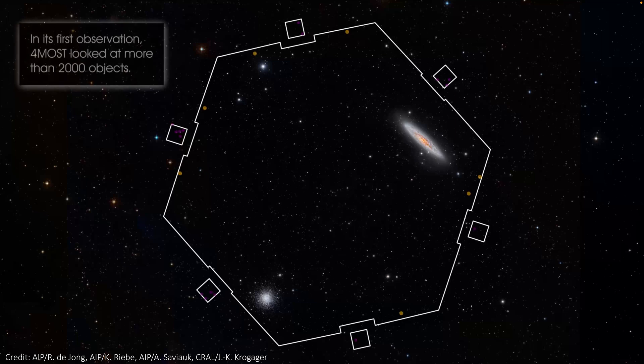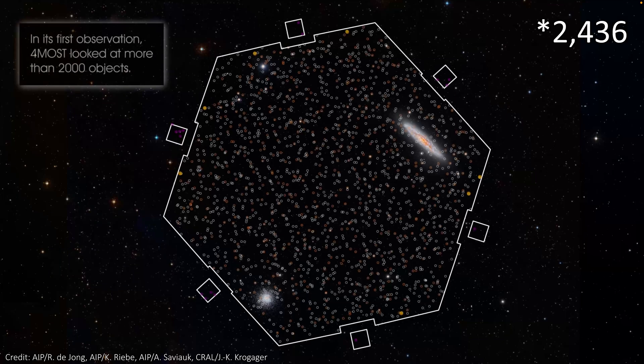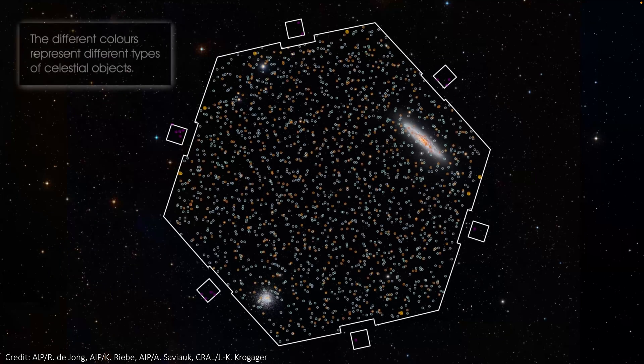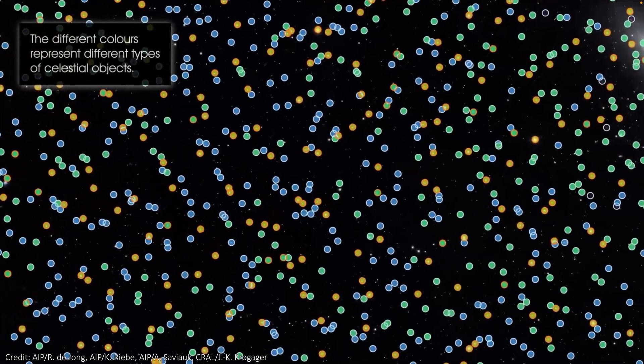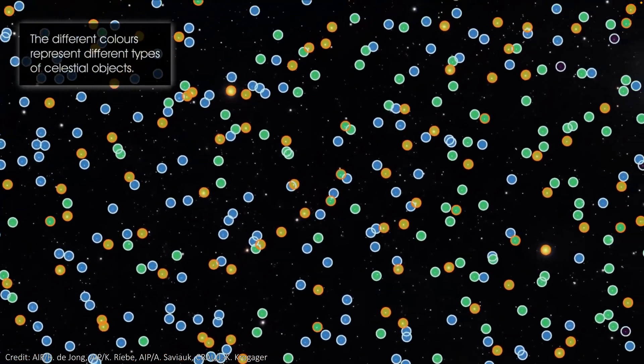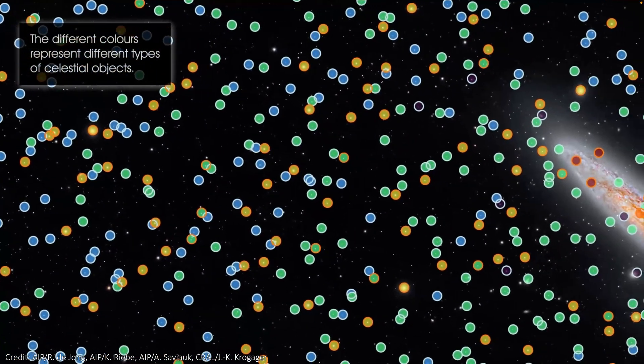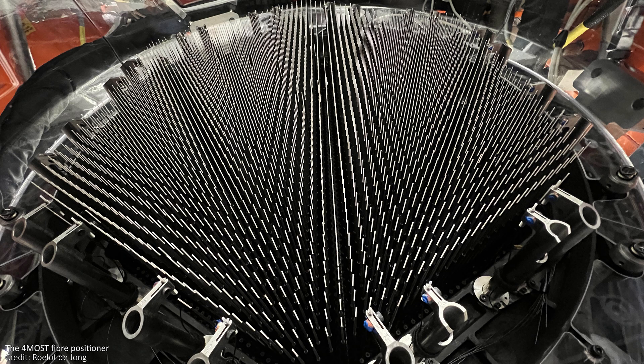Another really amazing thing about Foremost is how many objects it can see at any one time. Foremost has 2,456 fibers, which get placed to cover objects of interest during observations, and send the data to the instruments where the light is split up into spectra. Each of those fibers are made of glass, and each has a diameter similar to that of human hair. Foremost is literally catching ancient light that's been traveling for billions of years in glass fibers that are less than a tenth of a millimeter in diameter, and that is amazing to me.